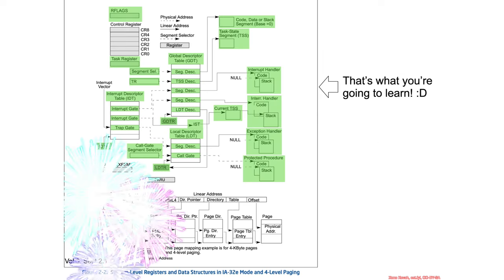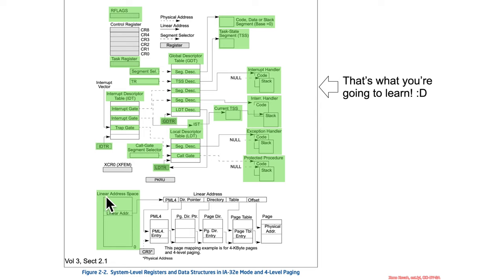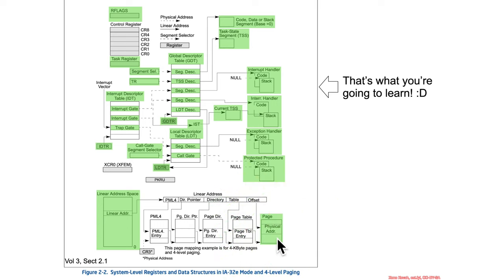In this section we got a reintroduction to the linear address space, which for our purposes is just a big flat 64-bit space. We have the notion of pages as fixed size chunks of virtual memory, and frames as the fixed size chunks of physical memory that back them. In the next sections, we'll try to understand how all these tables work to translate from virtual to physical addresses.